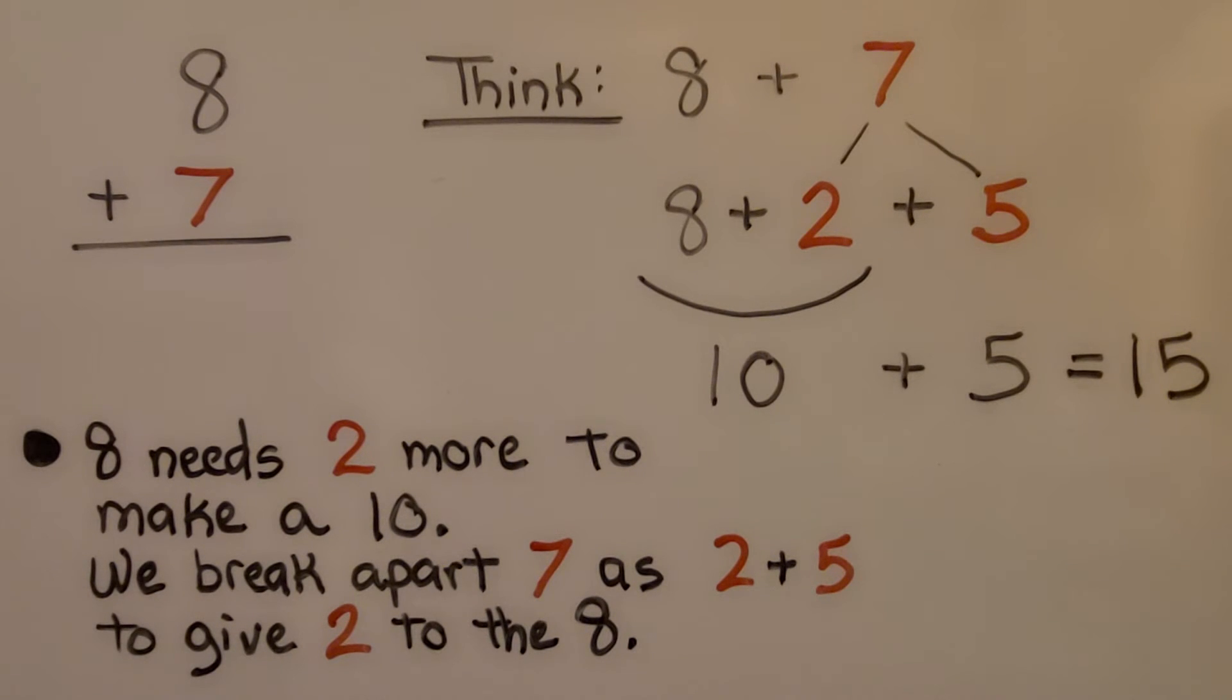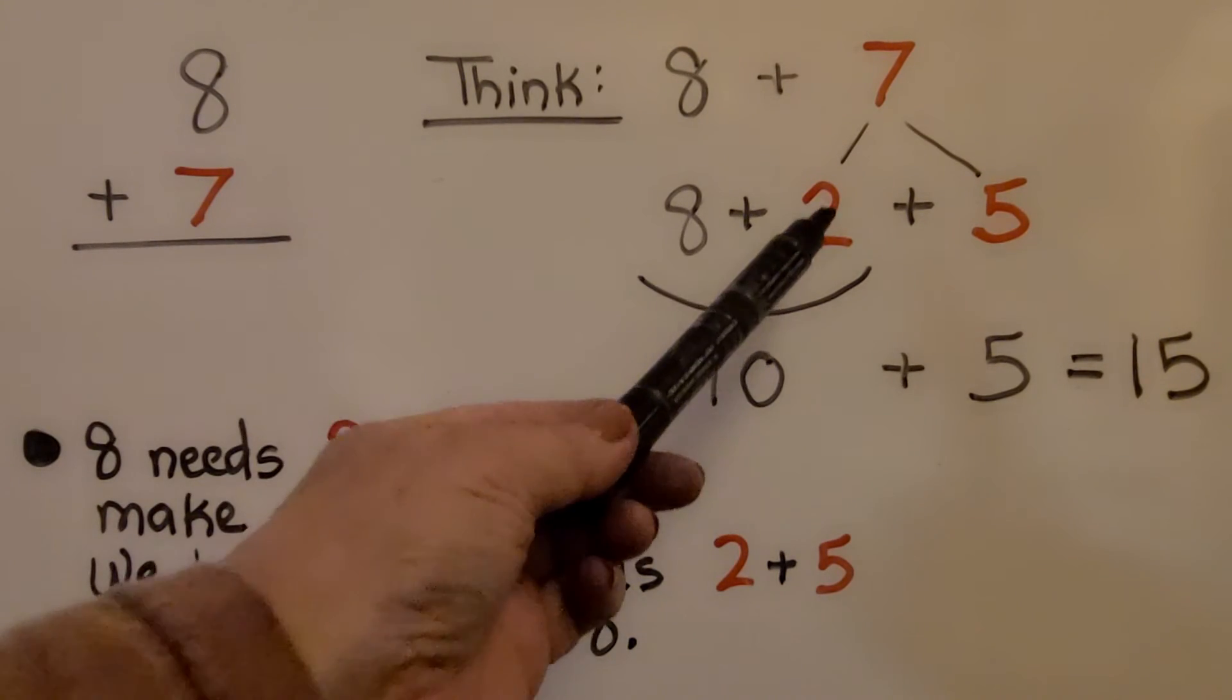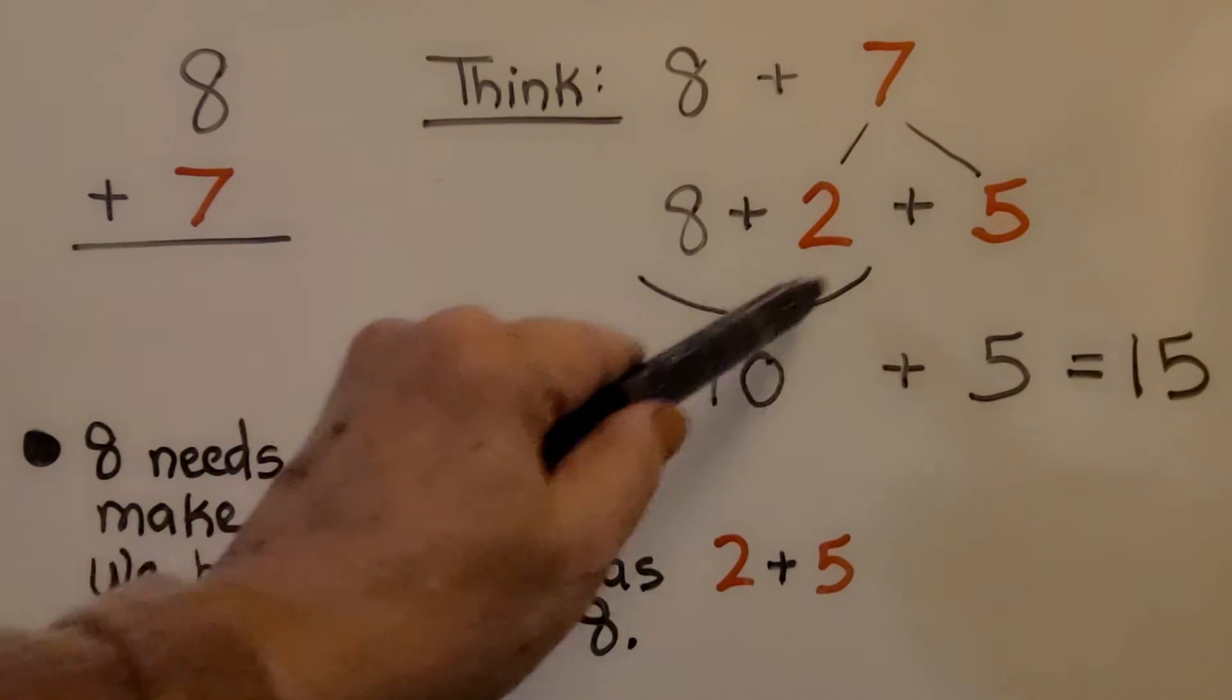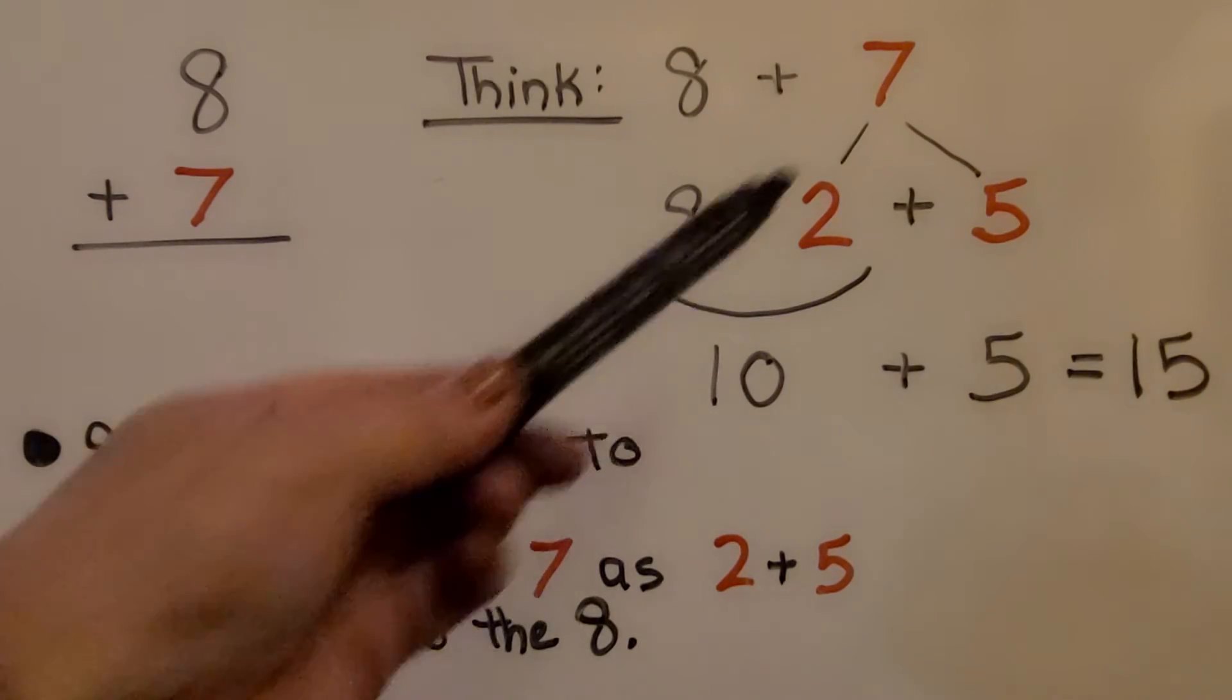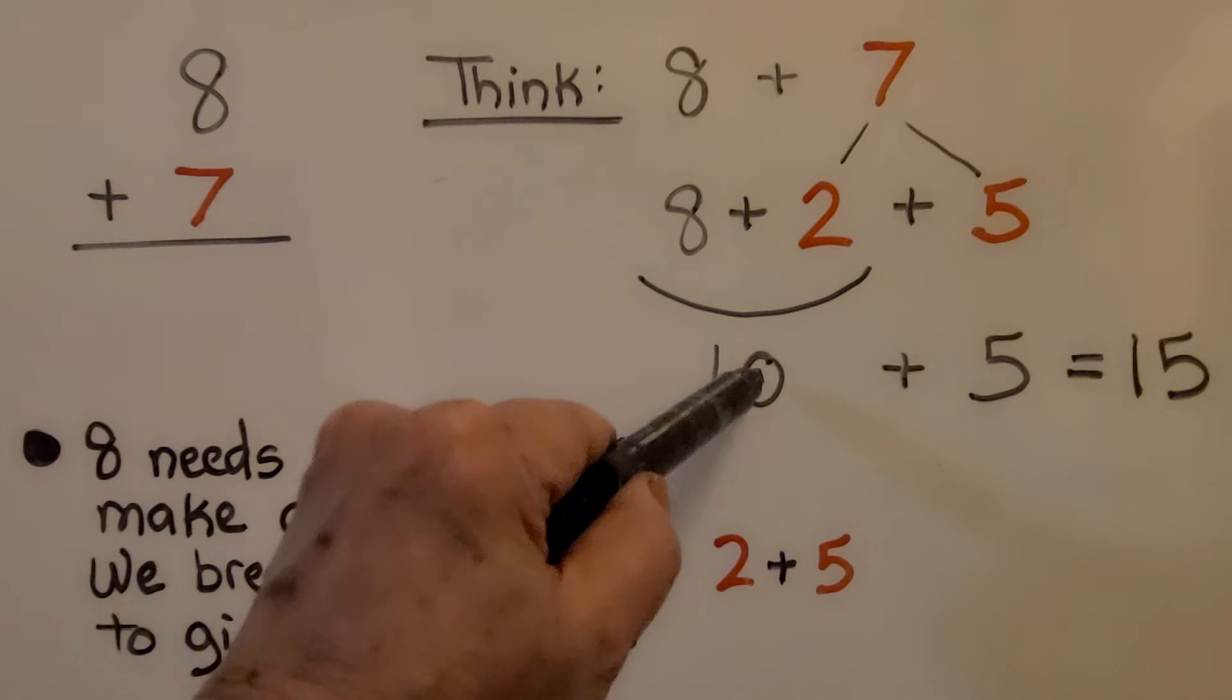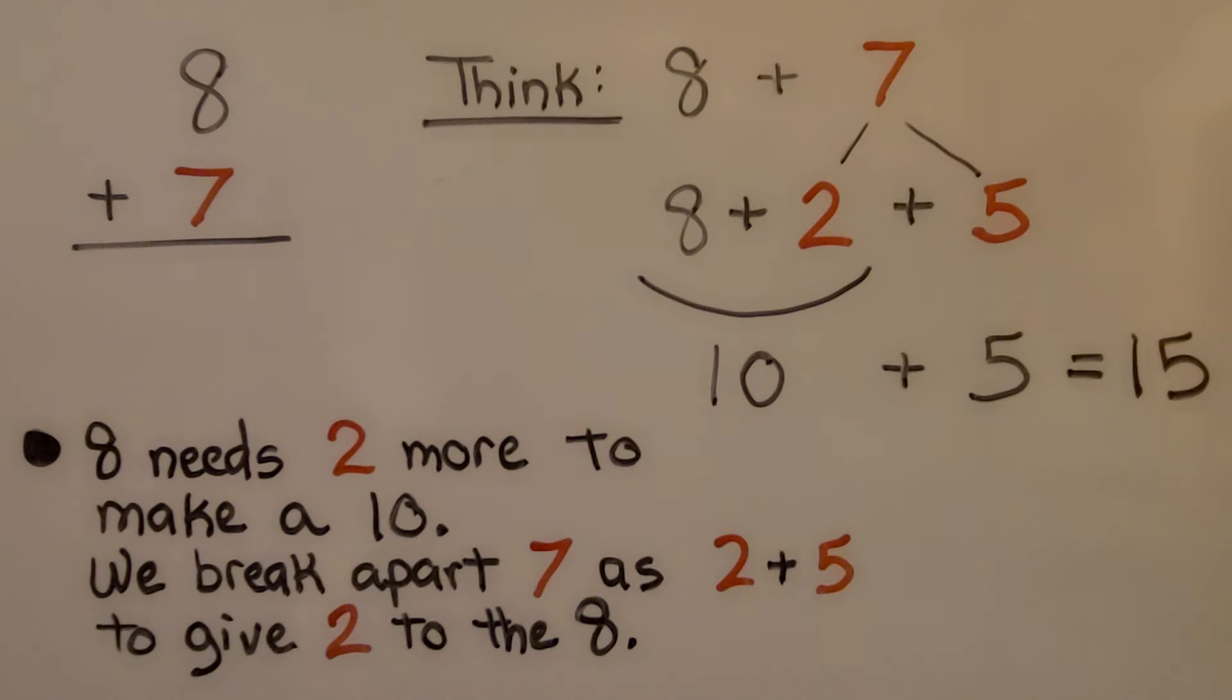To add 8 plus 7, there's a couple ways we could do it quickly. We can think that 7 is the same thing as 2 plus 5, and we can make a 10 with the 8 plus 2. Then add the 5 to it. We break 7 apart into a 2 and a 5, give the 2 to the 8 to make a 10, then add the 5 to get 15.